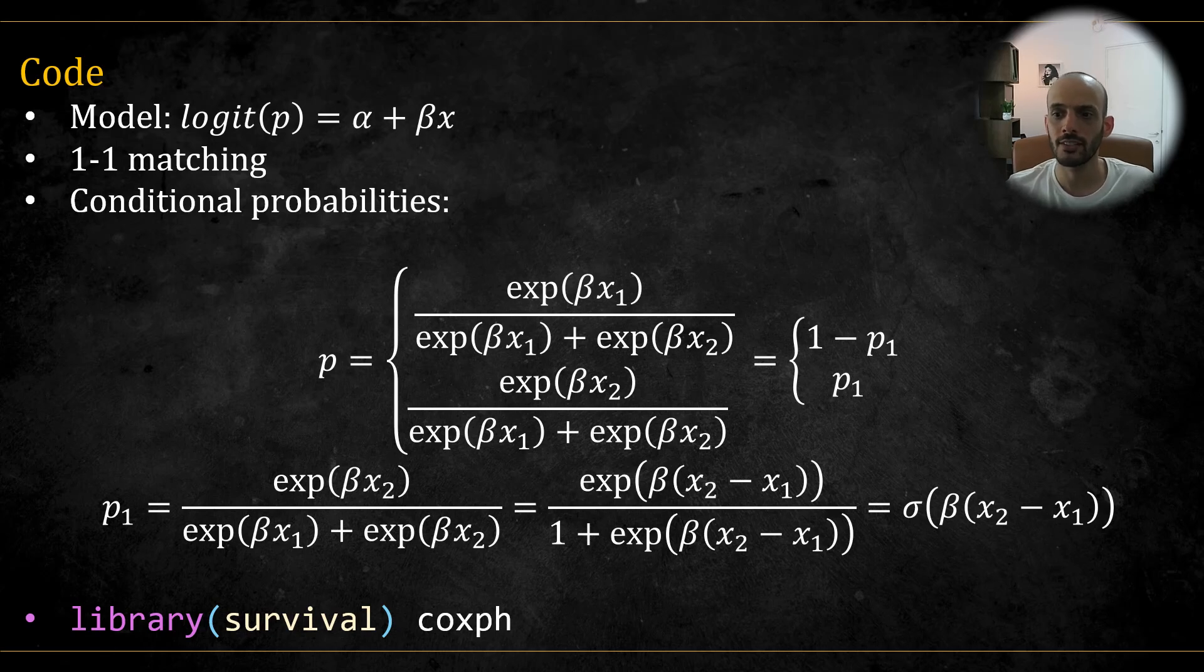Before moving on to the code, I just want to briefly explain how I calculated the conditional probabilities per stratum. The model includes only a single predictor x with a one-to-one matching. The conditional probabilities are given as follows, with the intercept disappearing, as we saw earlier. Notice that we can denote the probability as p_1 and 1 minus p_1. If we divide both numerator and denominator by e to the power of beta x, we arrive at the following expression, which is simply the sigmoid function of this.